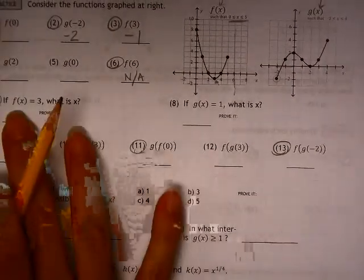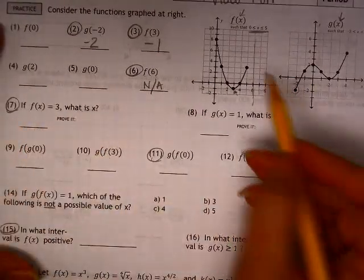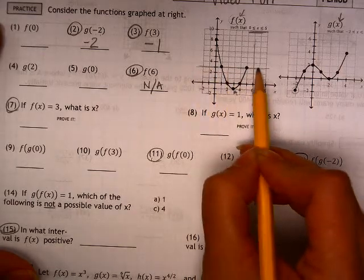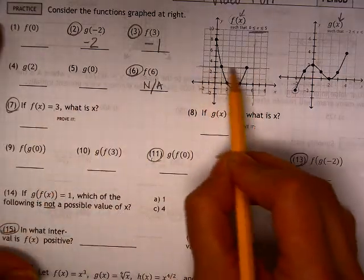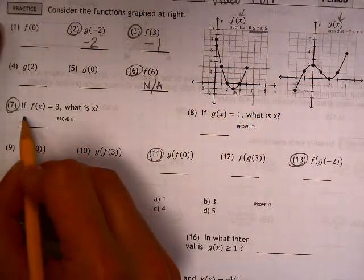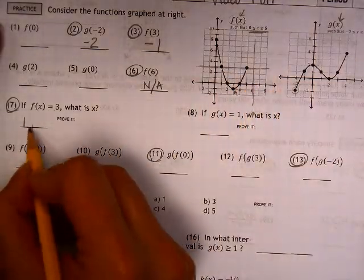Now let's look at problem 7. This one is going backwards. It's saying when is the function equal to 3? Well, it's equal in two spots: at 1 and at 5.